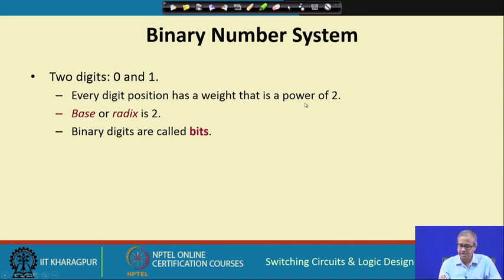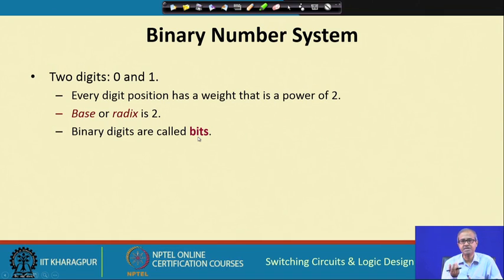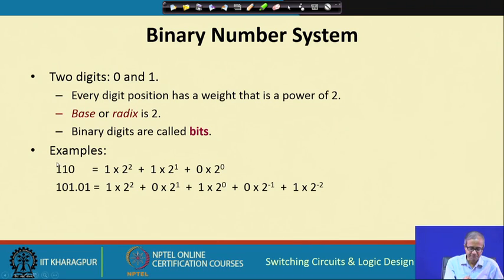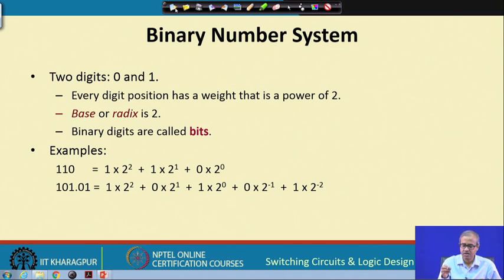Coming to the binary number system, here we talk about only 2 digits — 0 and 1 — so the base or radix is 2. Binary digits are called bits, where a bit represents a binary digit, either 0 or 1. For a binary number such as 110, we multiply each digit by a power of 2: 2⁰ = 1, 2¹ = 2, 2² = 4. So 1×4 + 1×2 + 0×1 = 6.